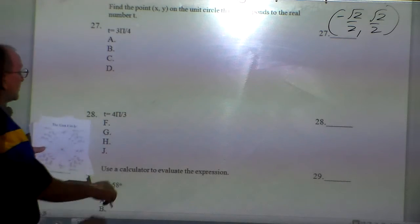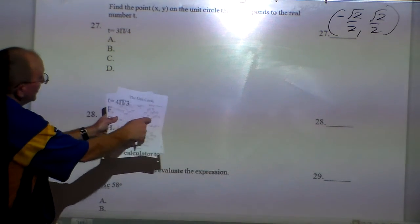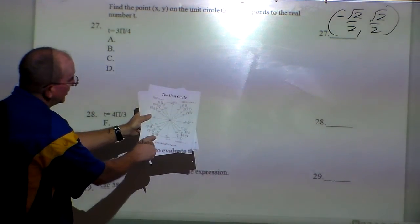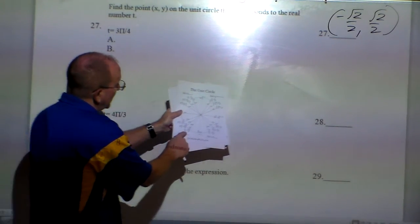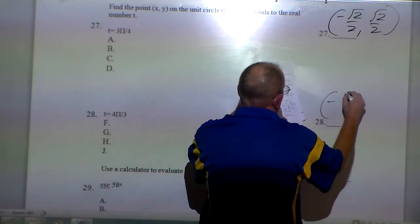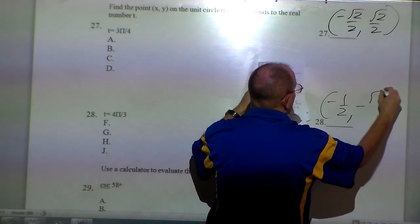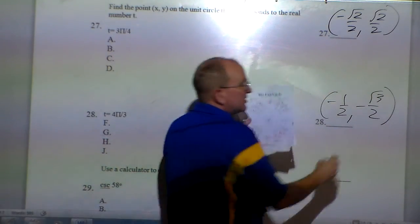And 28 is very similar. 4 pi over 3, I want to come around, is right here. 4 pi over 3, that point is at negative 1 half, negative square root of 3 over 2. That's it.